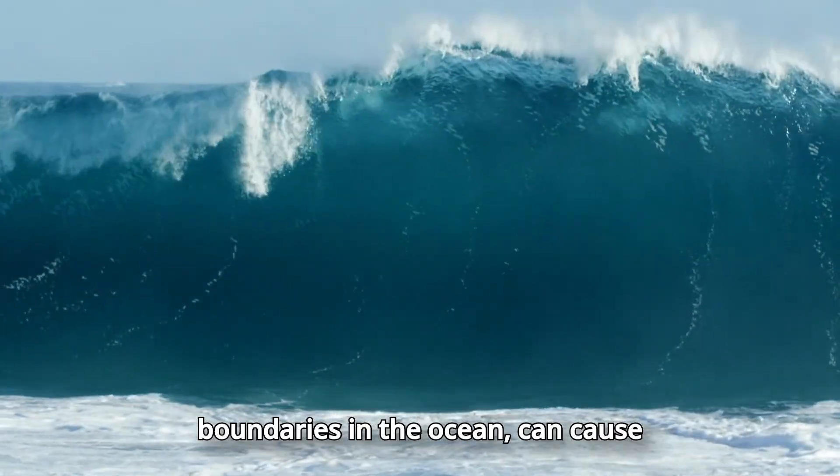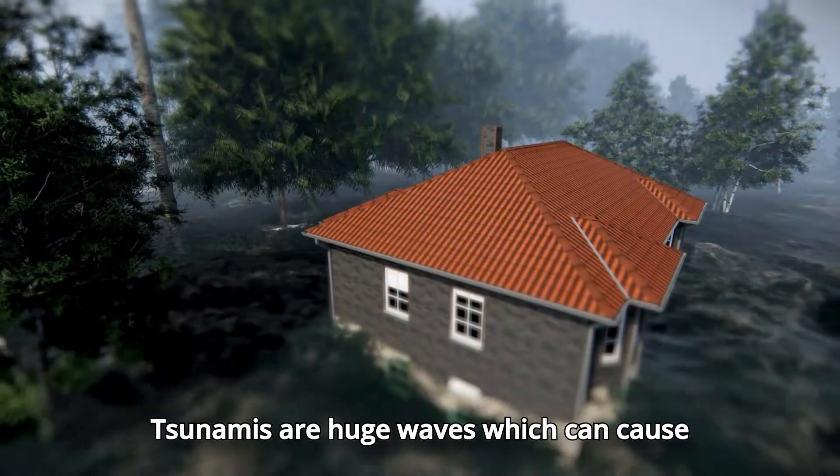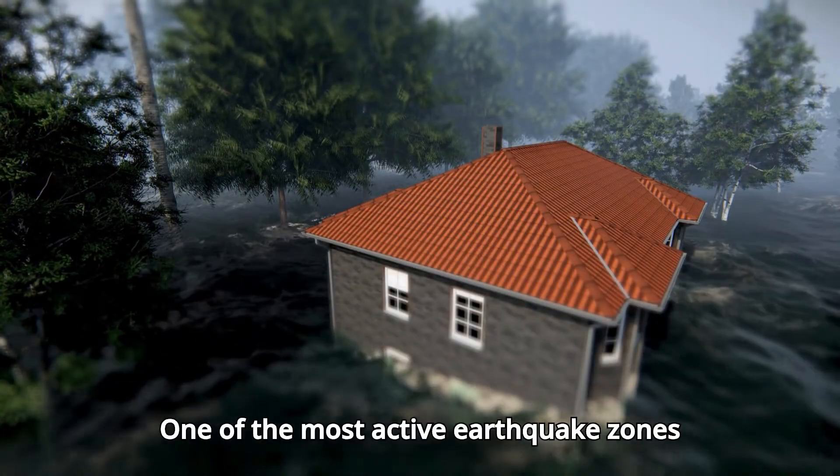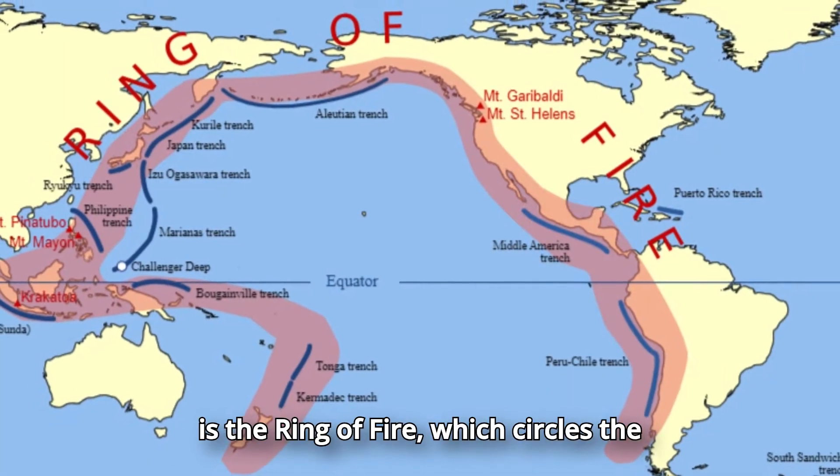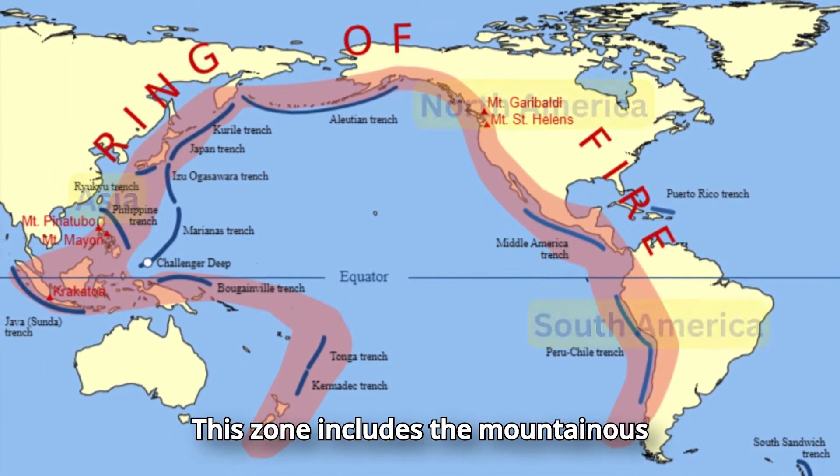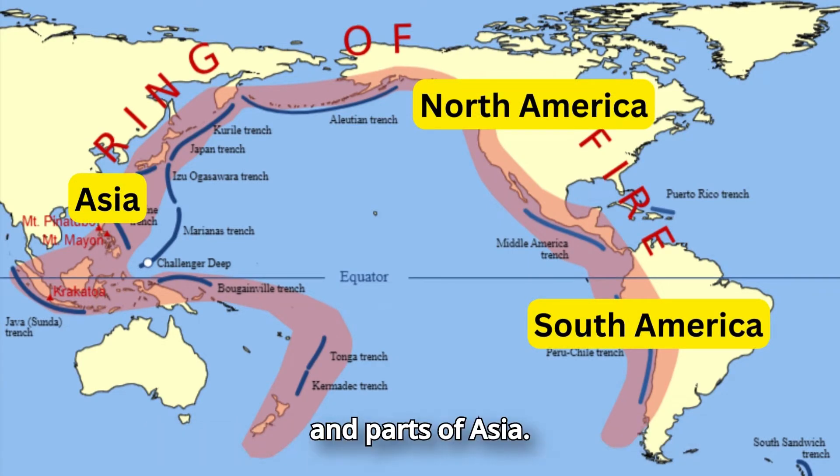Earthquakes which occur along plate boundaries in the ocean can cause tsunamis. Tsunamis are huge waves which can cause great destruction when they reach land. One of the most active earthquake zones is the Ring of Fire which circles the Pacific Ocean. This zone includes the mountainous western coasts of North and South America and parts of Asia.